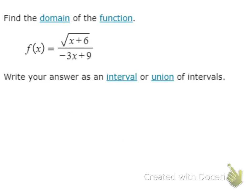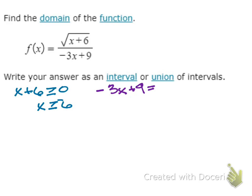Let's look at another one. Here again, we have a radical and a denominator. Looking at the radical, we need x plus 6 to be greater than or equal to 0, so x has to be greater than or equal to negative 6. Now, looking at the denominator, negative 3x plus 9 cannot be equal to 0, so negative 3x cannot equal negative 9, meaning x cannot equal positive 3.